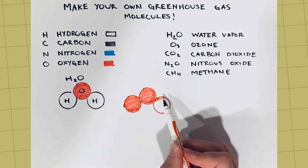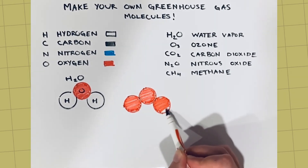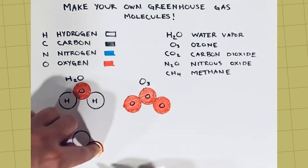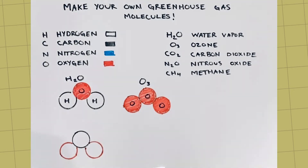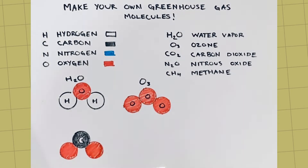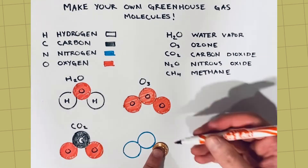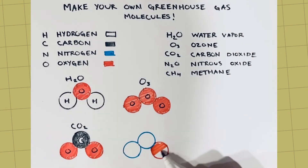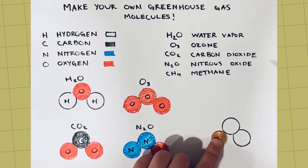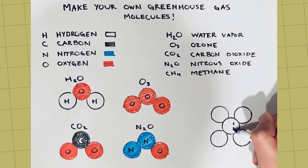Ozone, or O3, has three oxygen atoms. Carbon dioxide, or CO2, has one carbon atom and two oxygen atoms. Nitrous oxide, N2O, has two nitrogen atoms and one oxygen atom. And methane, CH4, has one carbon atom and four hydrogen atoms.